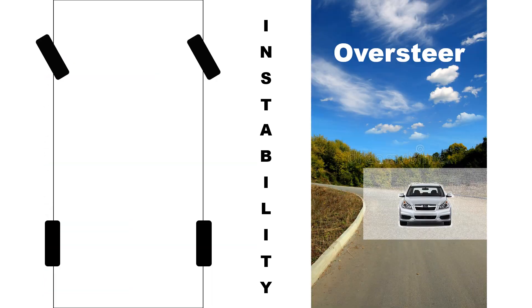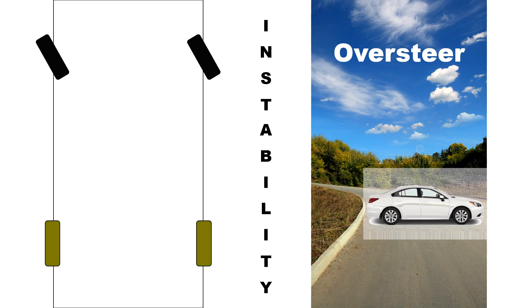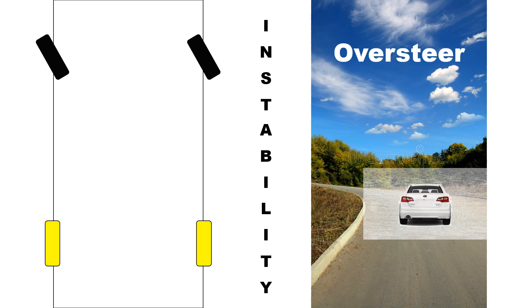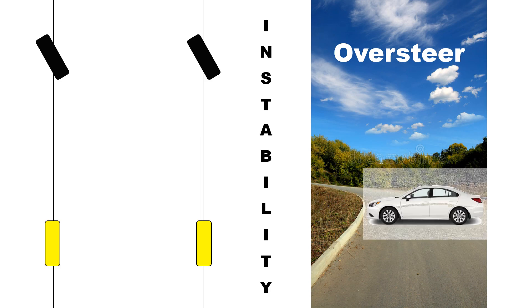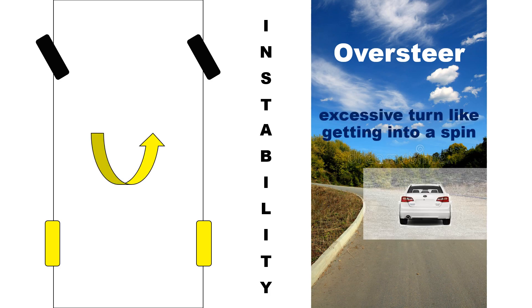When a car oversteers, especially when slowing down on a corner, it turns excessively because the rear wheels lose grip. The most extreme case of oversteering is that the car spins continuously because it turned sharper than the curve.